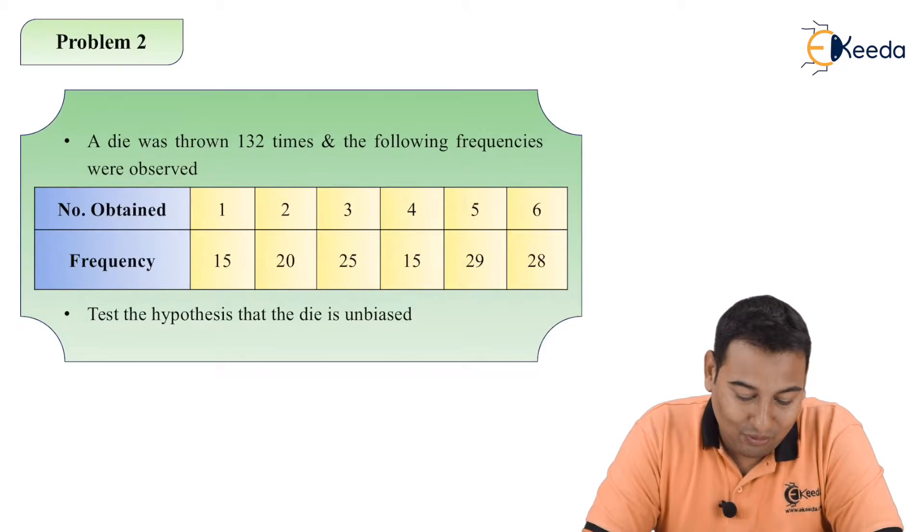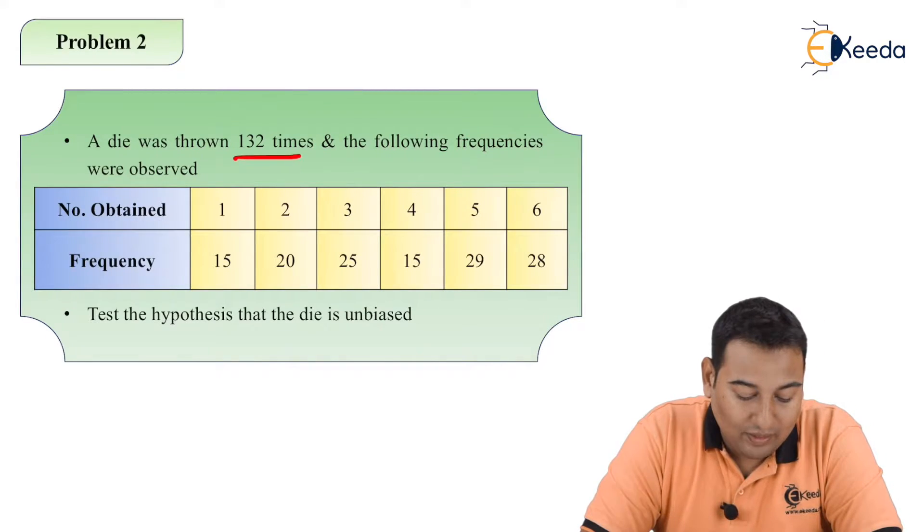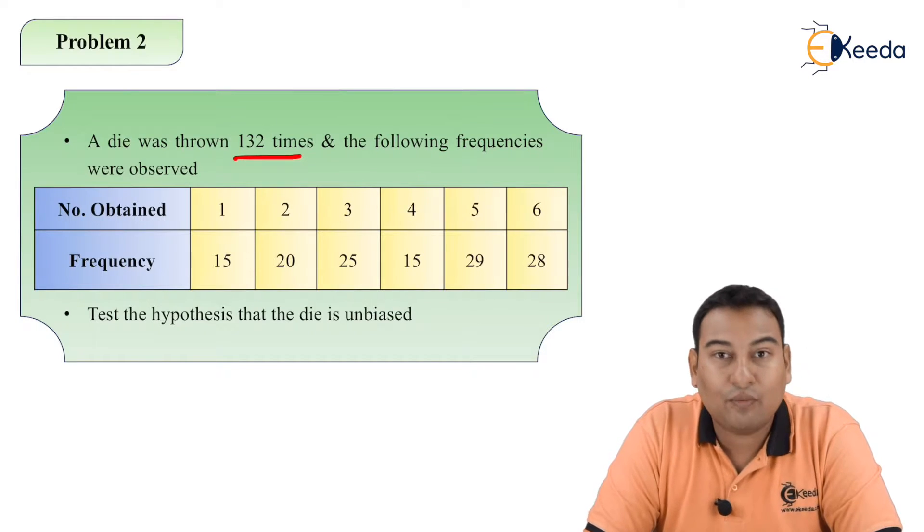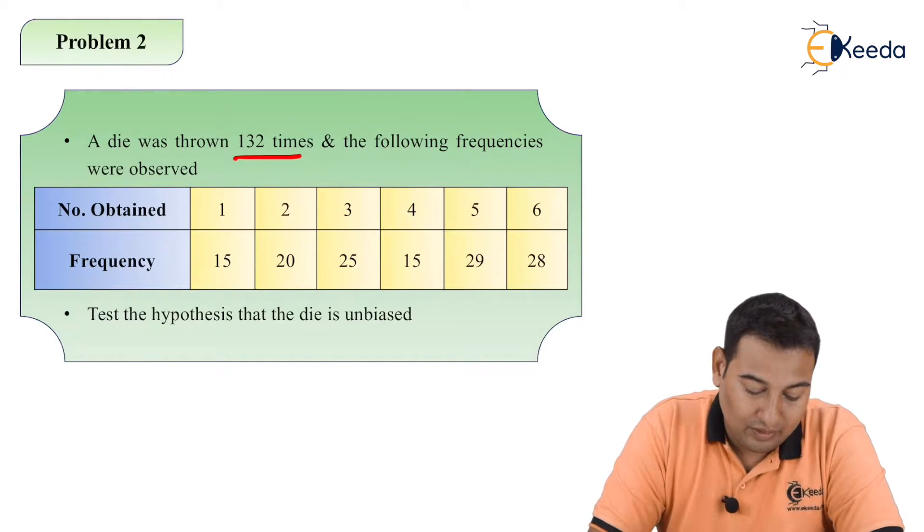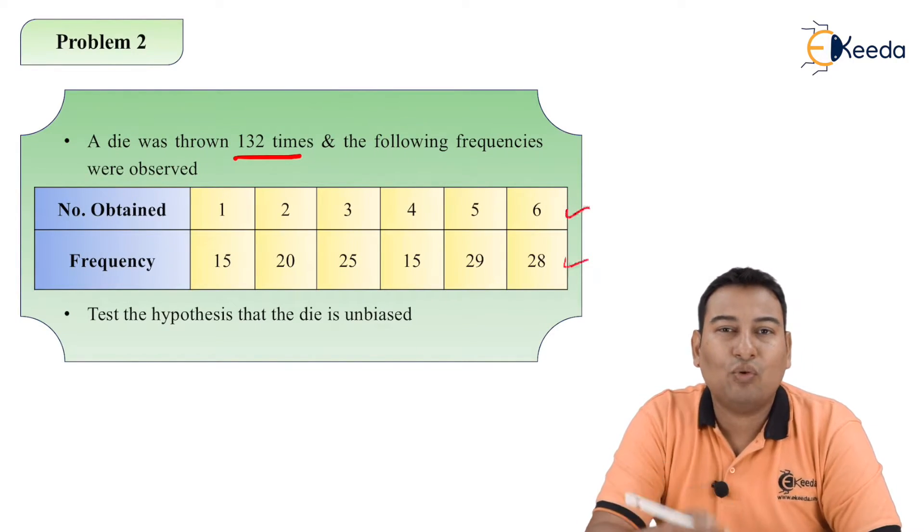Let's have a look on the second problem. A die was thrown 132 times and the following frequencies were obtained. So the die was thrown 132 times and these are the frequencies obtained.